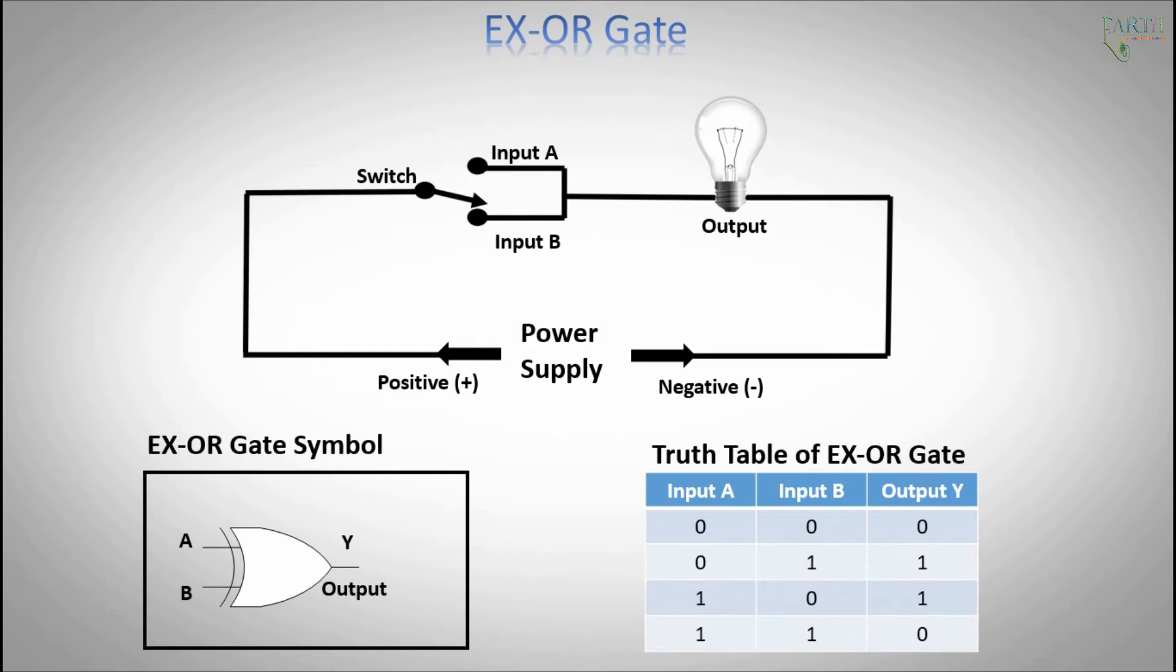The truth table above shows that the output of an exclusive OR gate only goes high when both of its two input terminals are at different logic levels with respect to each other. If these two inputs A and B are both at logic level 1 or both at logic level 0, the output is a 0, making the gate an OR but not the even gate.